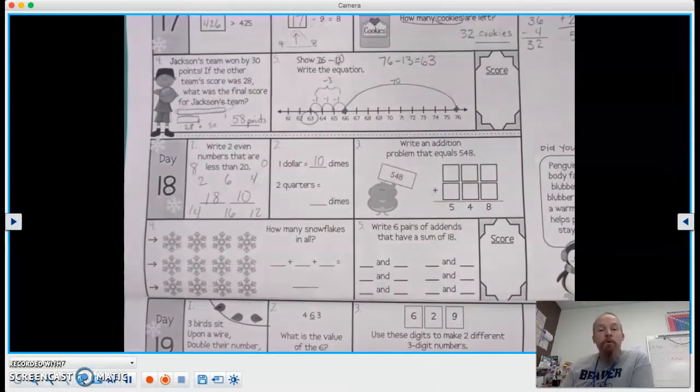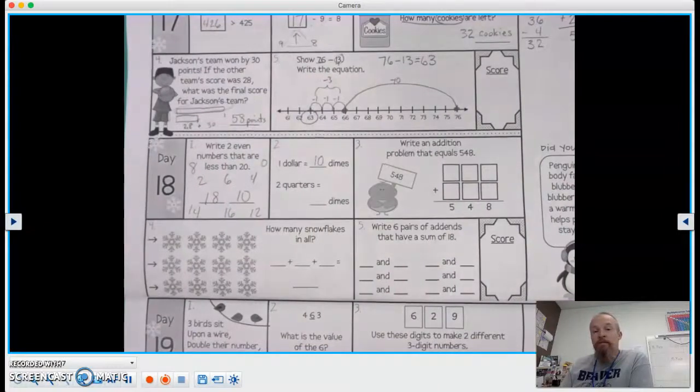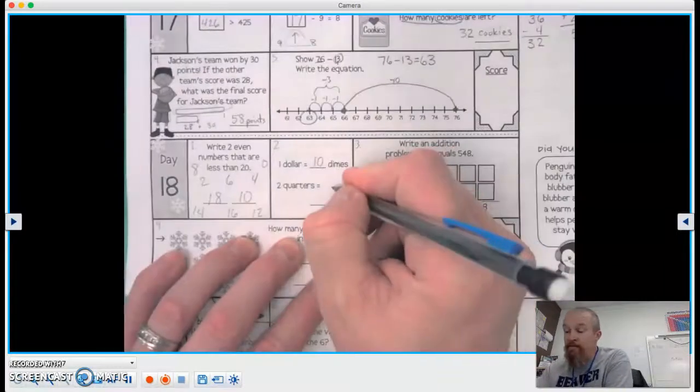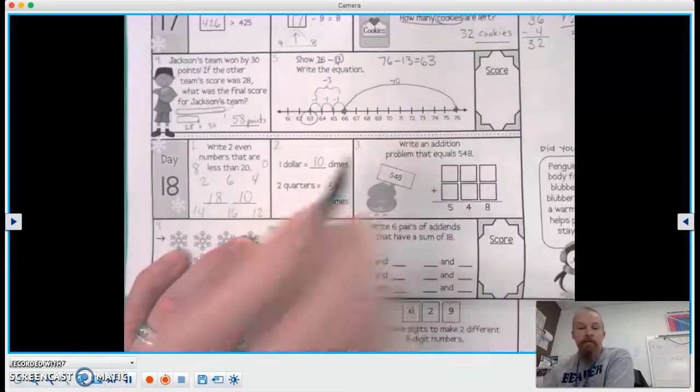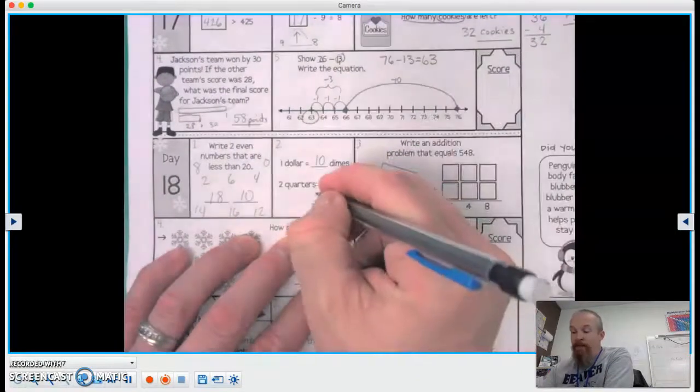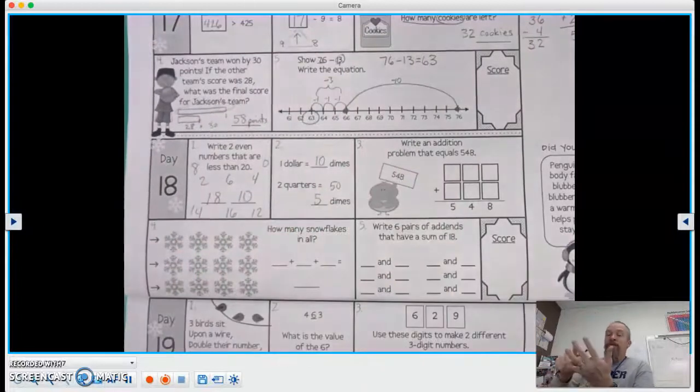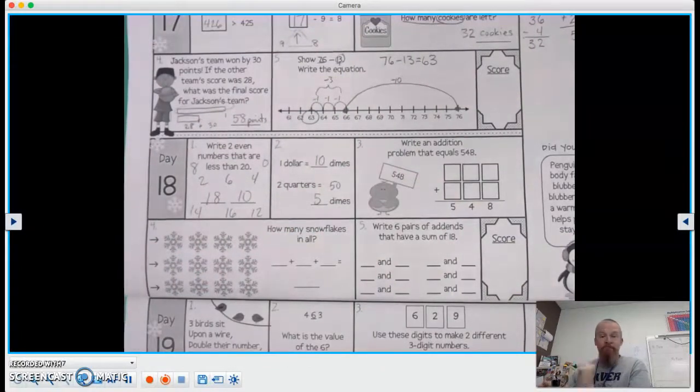Two quarters equals 50 cents. So how many dimes is that? Well, it's five tens. Ten, 20, 30, 40, 50. Five dimes.